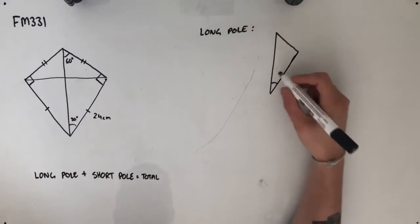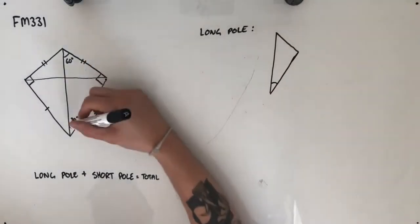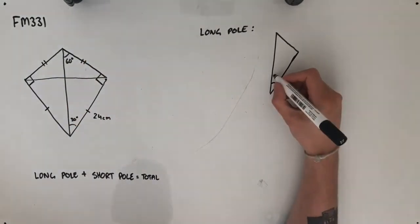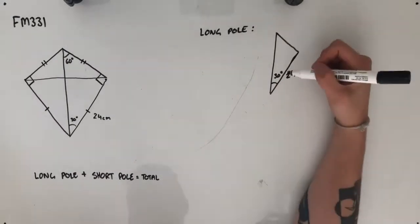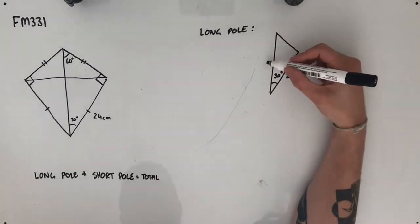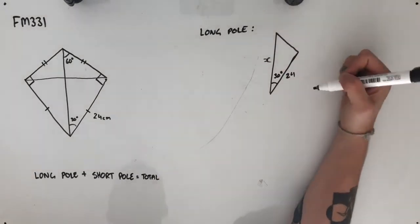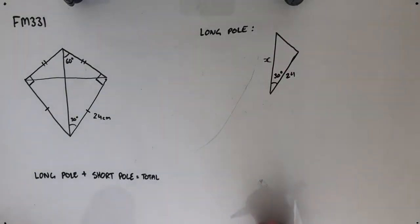To answer this question, I could use the 60 degrees or I could use 30 degrees. It doesn't really matter. I'm going to choose to use the 30, this length here of 24. And of course, I'm going to be finding this length here, the length of that long pole.